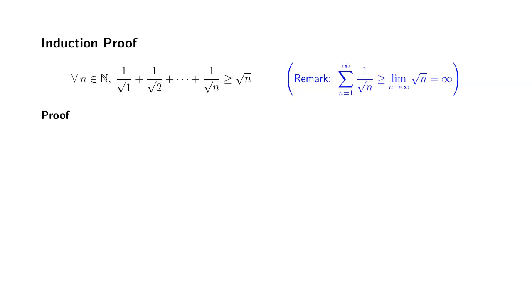Alright, let's look at this induction proof for the following statement. For all natural number n, 1 over square root of 1 plus 1 over square root of 2 plus all the way to 1 over square root of n is greater than or equal to square root of n.